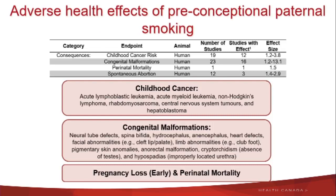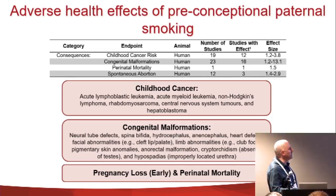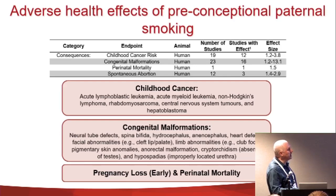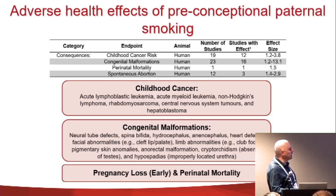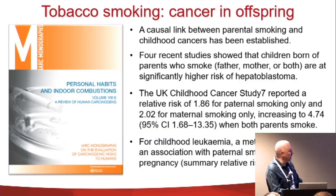This slide summarizes studies that have looked at childhood cancer, congenital malformation, perinatal mortality, and spontaneous abortion — all done in humans. A significant fraction of these studies found a significant effect. Childhood cancer is associated with parental smoking; these are the specific types of childhood cancer associated with both paternal and maternal smoking, along with a long list of different congenital malformations, pregnancy loss, and perinatal mortality.